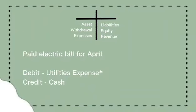Paid electric bill for April. John Smith paid the electric bill using cash. That's why the electric bill is in the debit, dahil ito ay pumasok sa atin. At ang cash is credit, because we paid it — at ito ay lumabas.